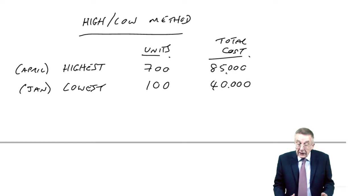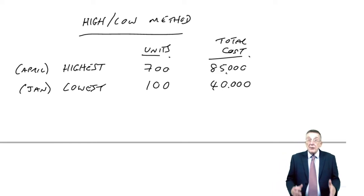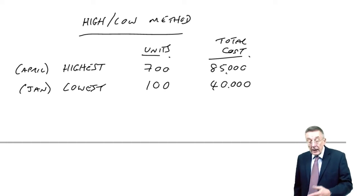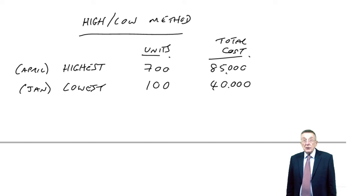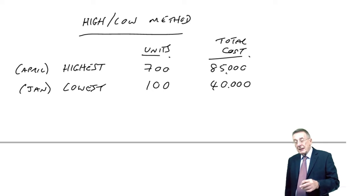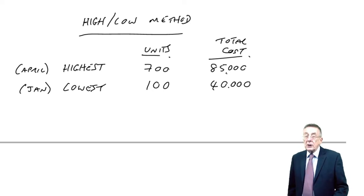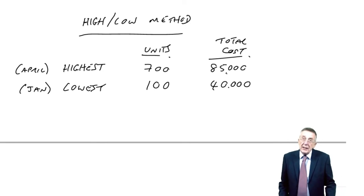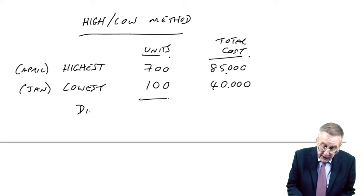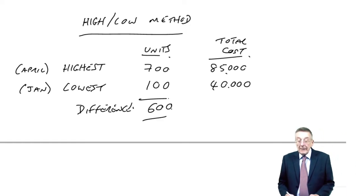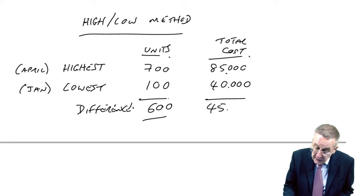We do our calculations based on simply those two months, the rest of them are now irrelevant. Why is the cost in April higher than in January? Remember the fixed cost will be the same in both months, and so the only reason the total cost is higher must be the extra variable cost of the extra units. We look at the difference: we made 600 more units, the extra cost was 45,000.